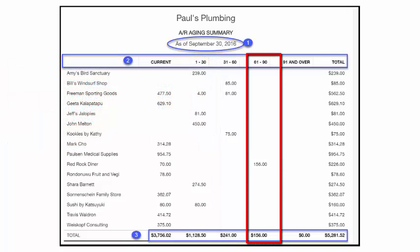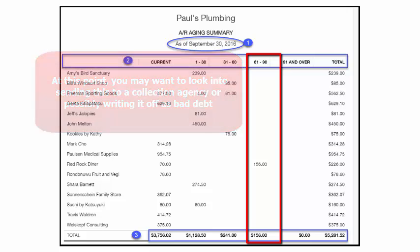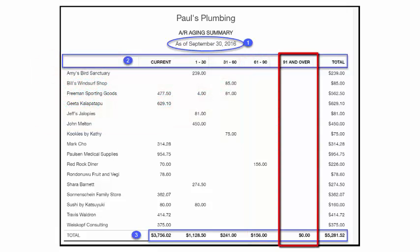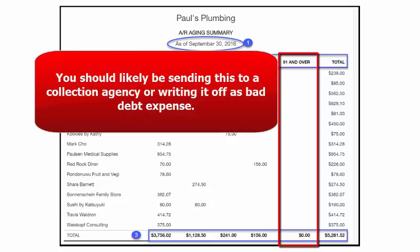The 61 to 90 day column indicates invoices that are 61 to 90 days overdue. Unless you have spoken with your customer and provided them with additional time to pay their outstanding balance, more than likely you will not be getting paid. At this point, you may want to look into sending this to a collection agency or possibly writing it off as bad debt. The 91 and over column indicates invoices that are 91 days past due — similarly, you should likely be sending these to a collection agency or writing them off as bad debt expense.